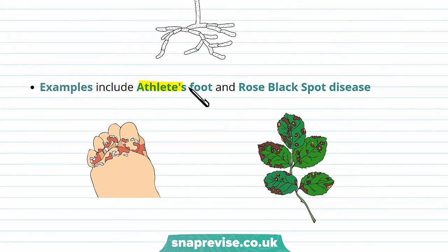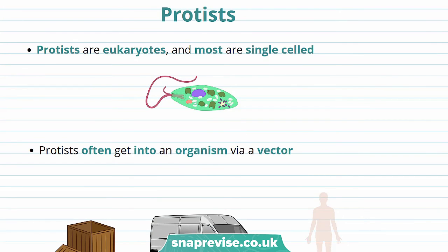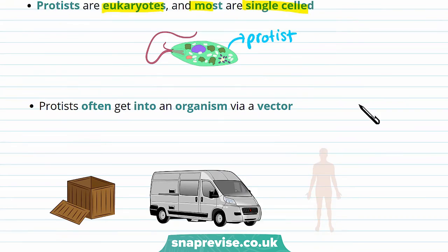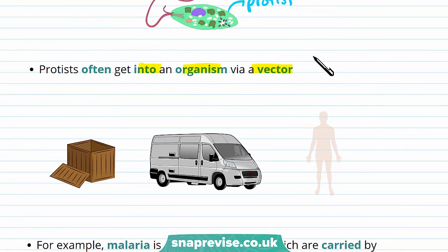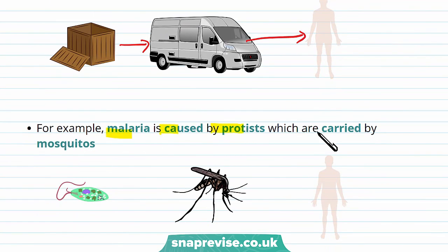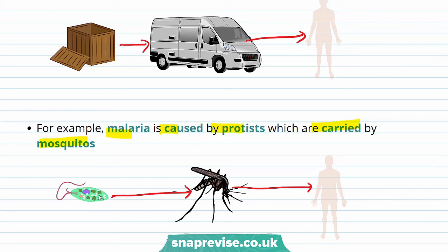Some diseases caused by fungi include athlete's foot and rose black spot disease. Protists can also cause disease. Protists are eukaryotes and most are single-celled. Protists are often spread and get into an organism via a vector — a vector is something that carries the pathogen without getting the disease itself. For example, malaria is caused by protists and these are carried by mosquitoes. Mosquitoes carry the parasite, and when one bites a human it infects it by transferring the protists to the blood. Malaria can be fatal as it can affect the red blood cells and the liver.